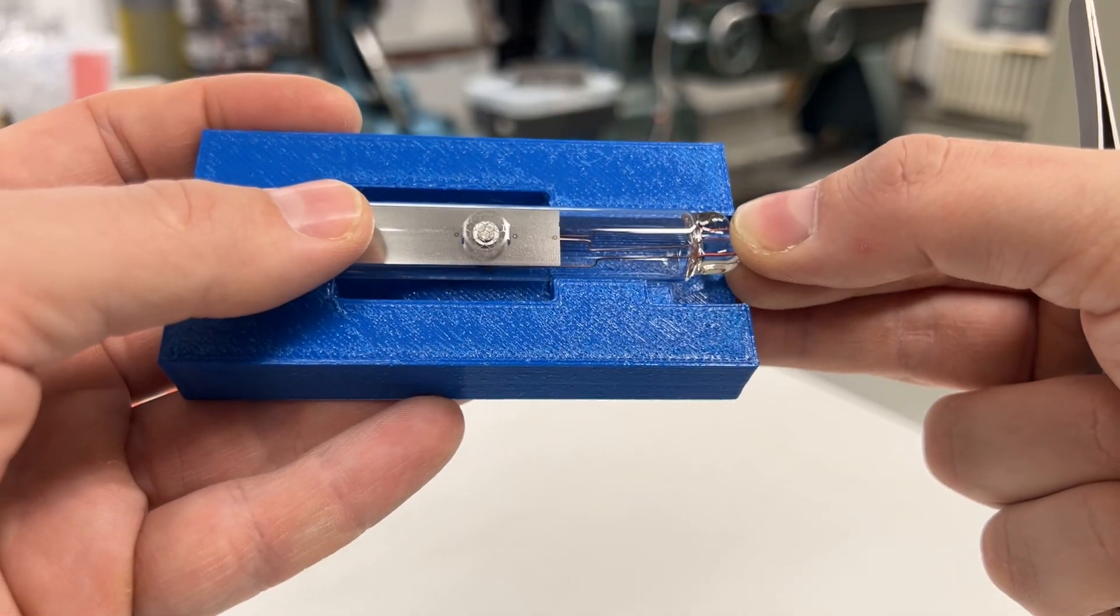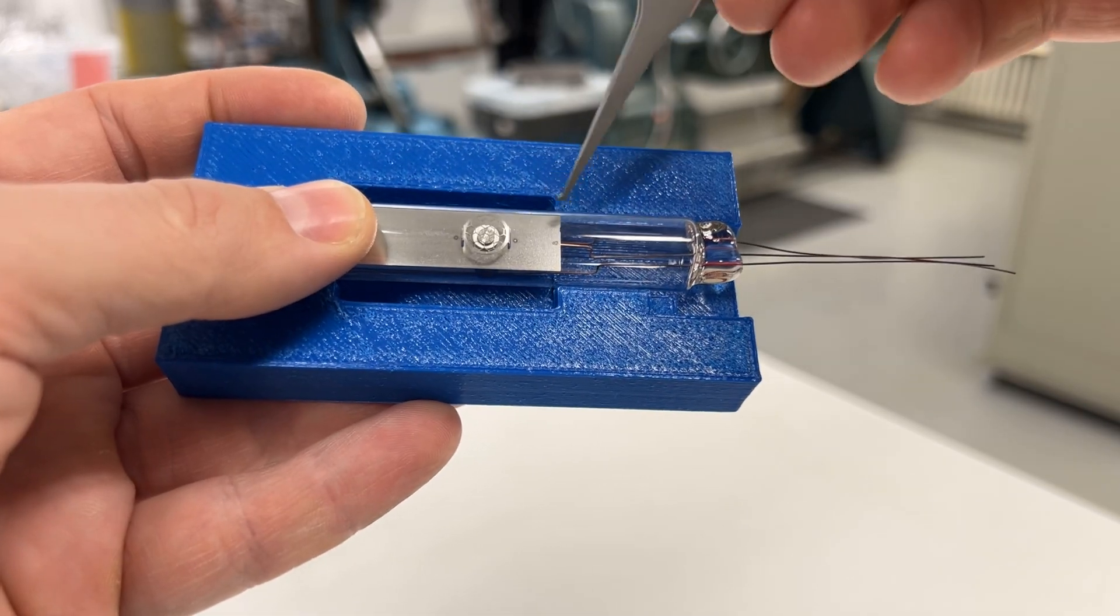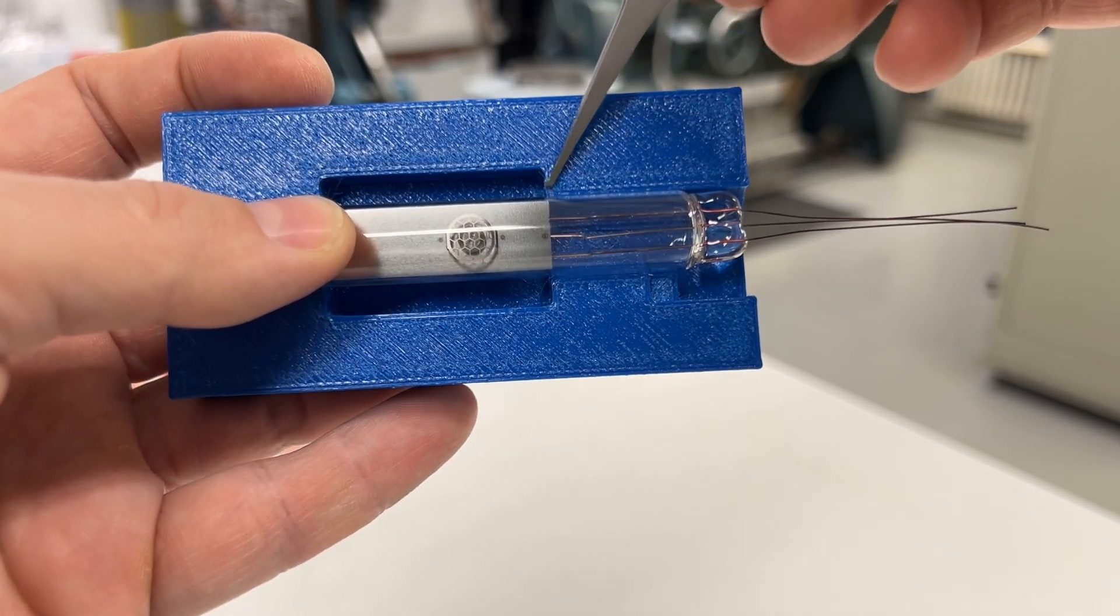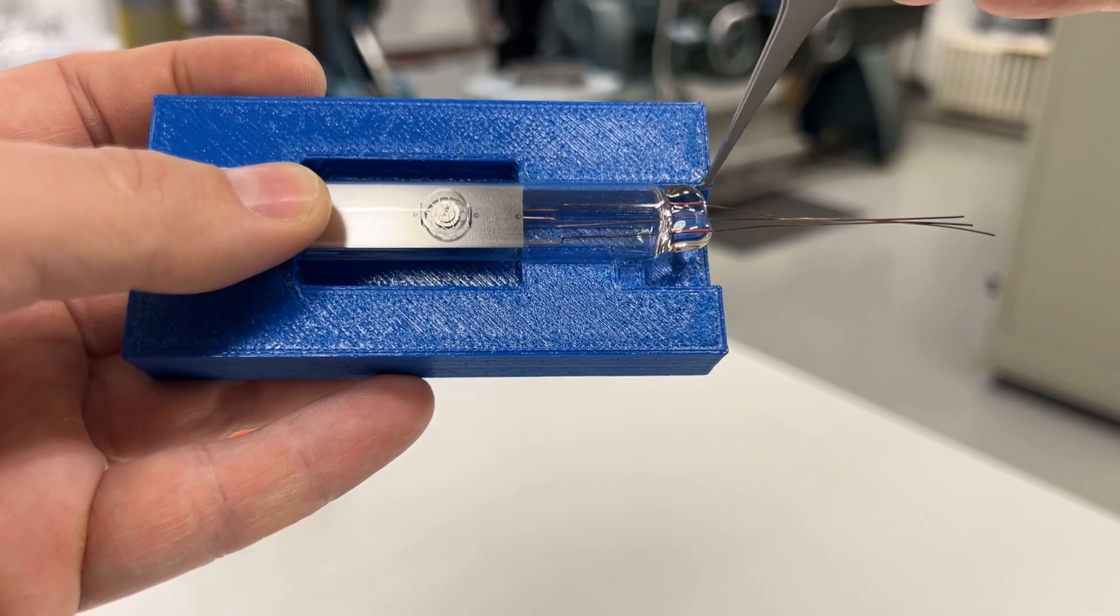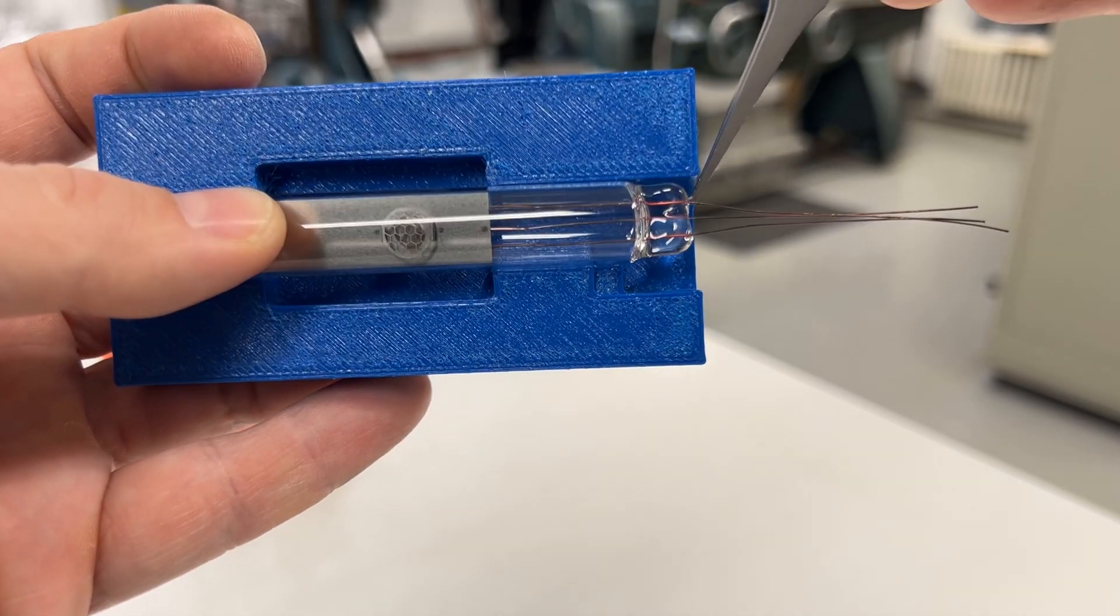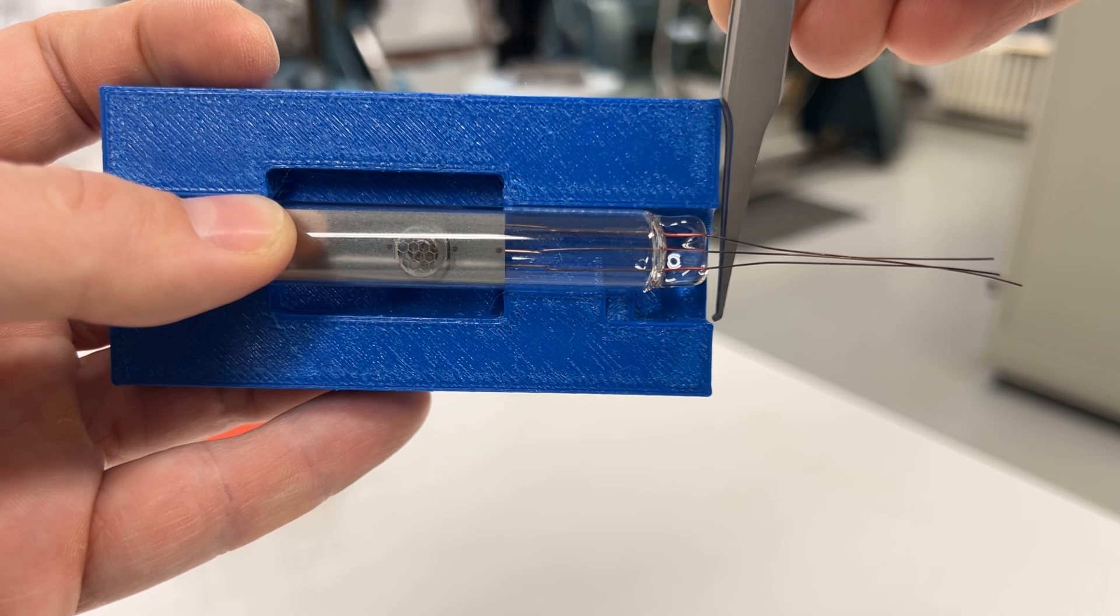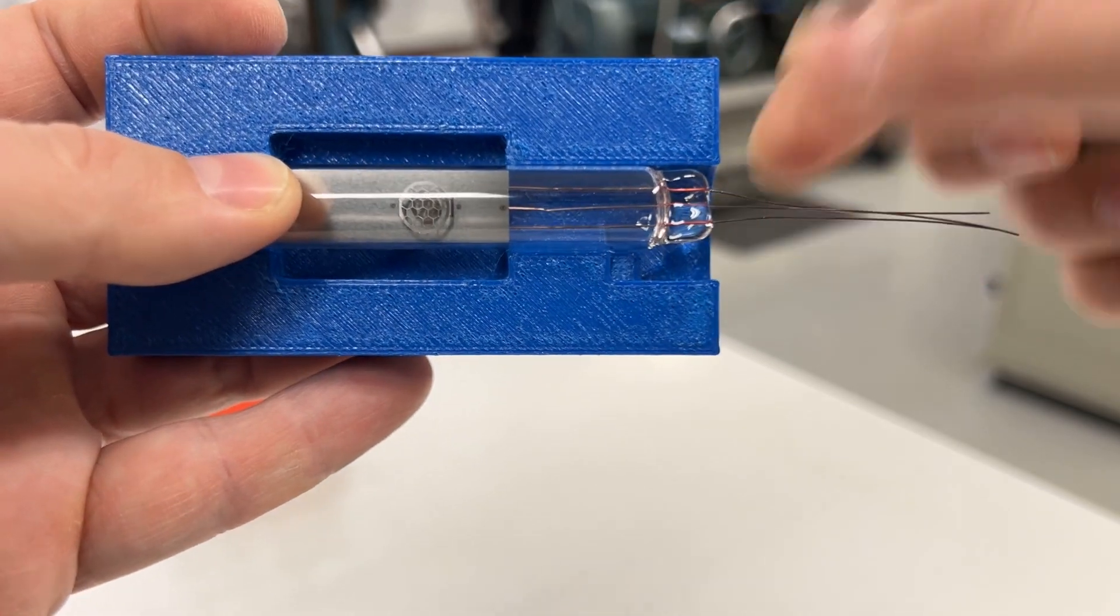With this tool we test for these parameters. I align the anode with this edge here and I check for the bottom of the seal. The bottom must not extend over this edge. So in this case it's good.